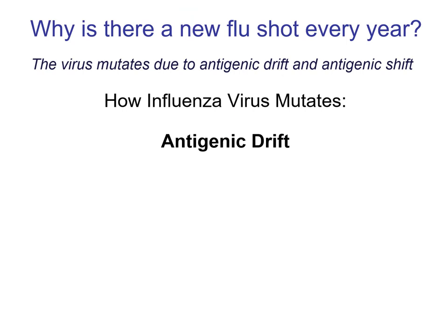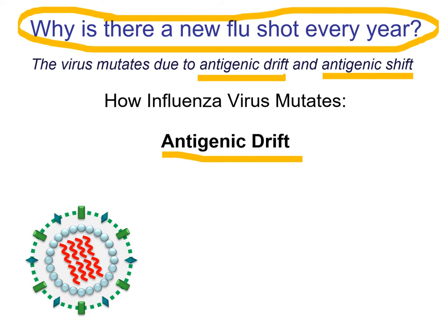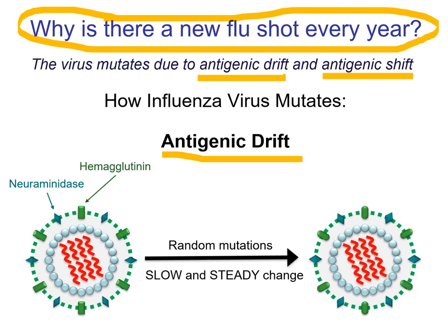Why do we have a new flu shot every year, and why do we occasionally get really scary flu viruses? The answer to the first question is antigenic drift. The influenza virus has its own RNA polymerase that lacks proofreading activity, so it mutates slowly and randomly every year, producing new viruses. The hemagglutinin and neuraminidase proteins change slightly, and your immune system may not recognize them anymore. So we make a new formulation of the flu shot every year.